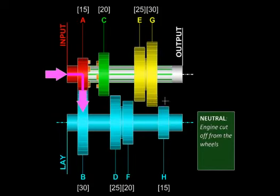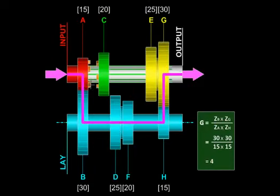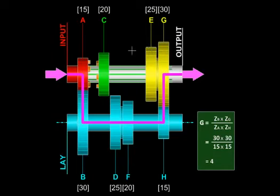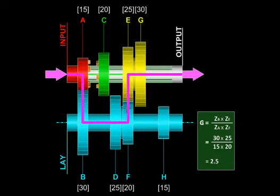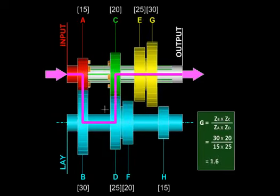We engage first gear by sliding the yellow gear to the right, so power starts flowing to the output shaft. You can see there is a reduction here and another reduction here, giving a very high gear ratio, which can be calculated using the number of teeth. In second gear, we slide this yellow gear to the left — power flows with a reduction, but not as much as in first gear, and the gear ratio reduces to 2.5.